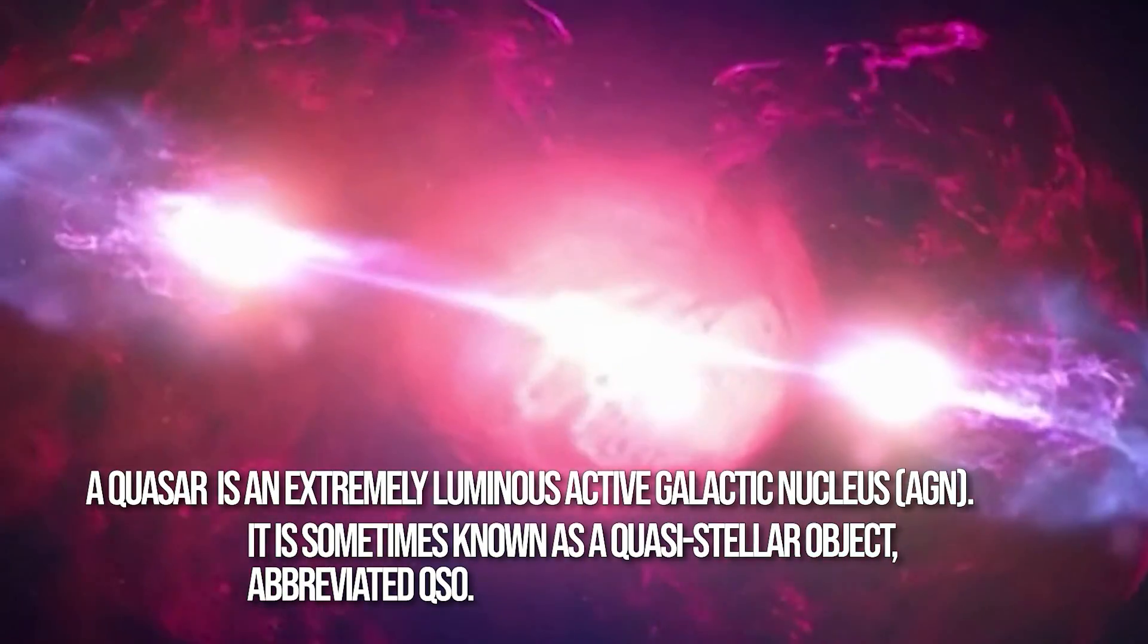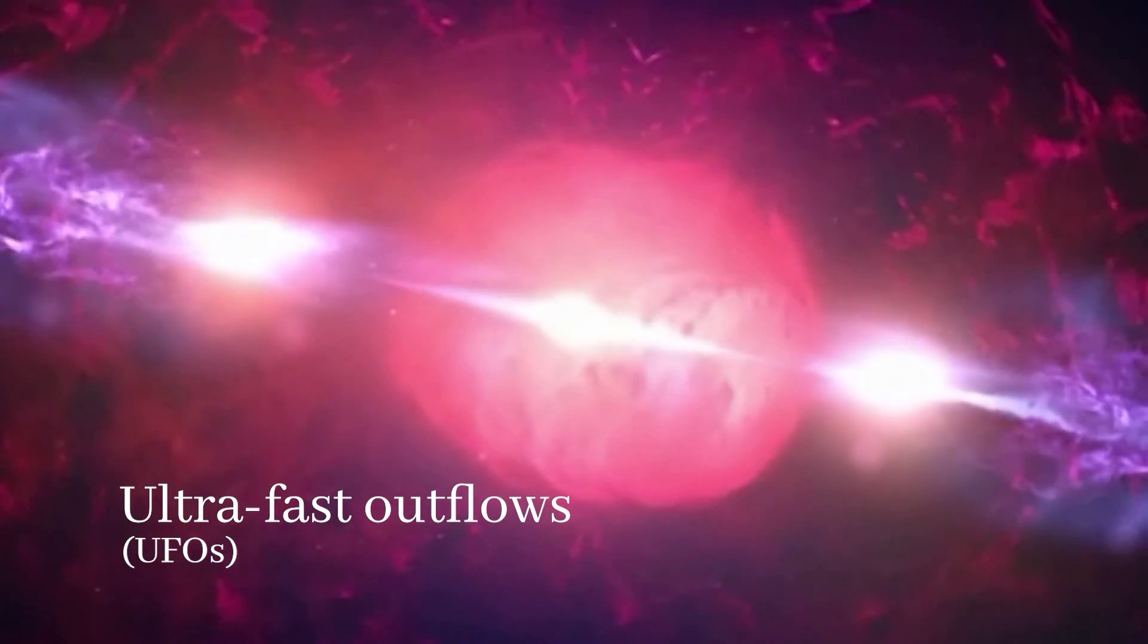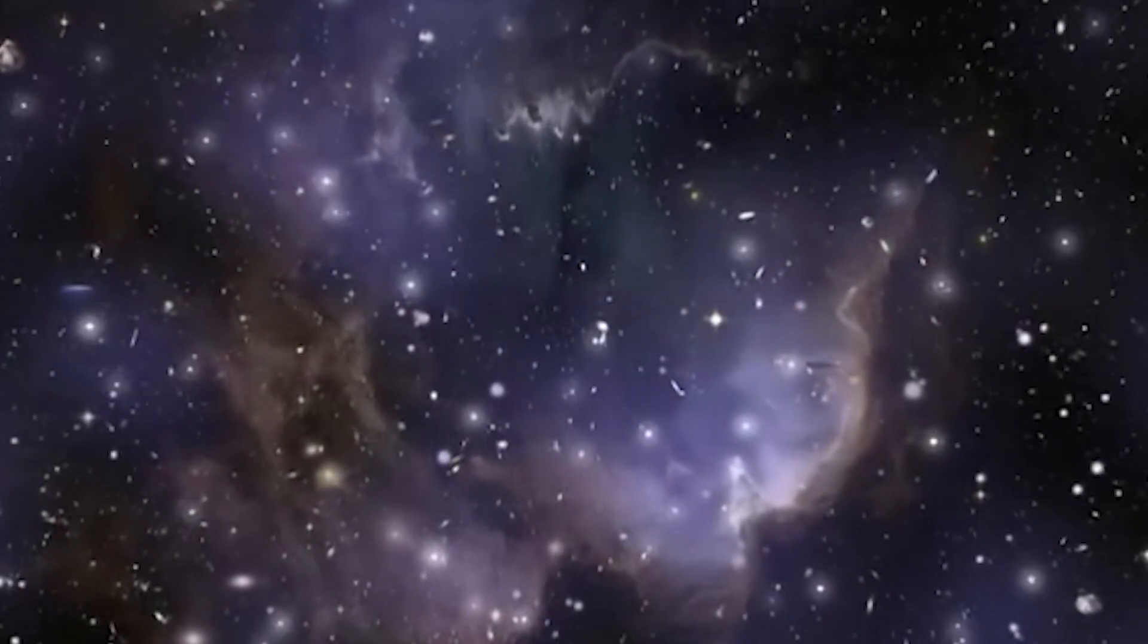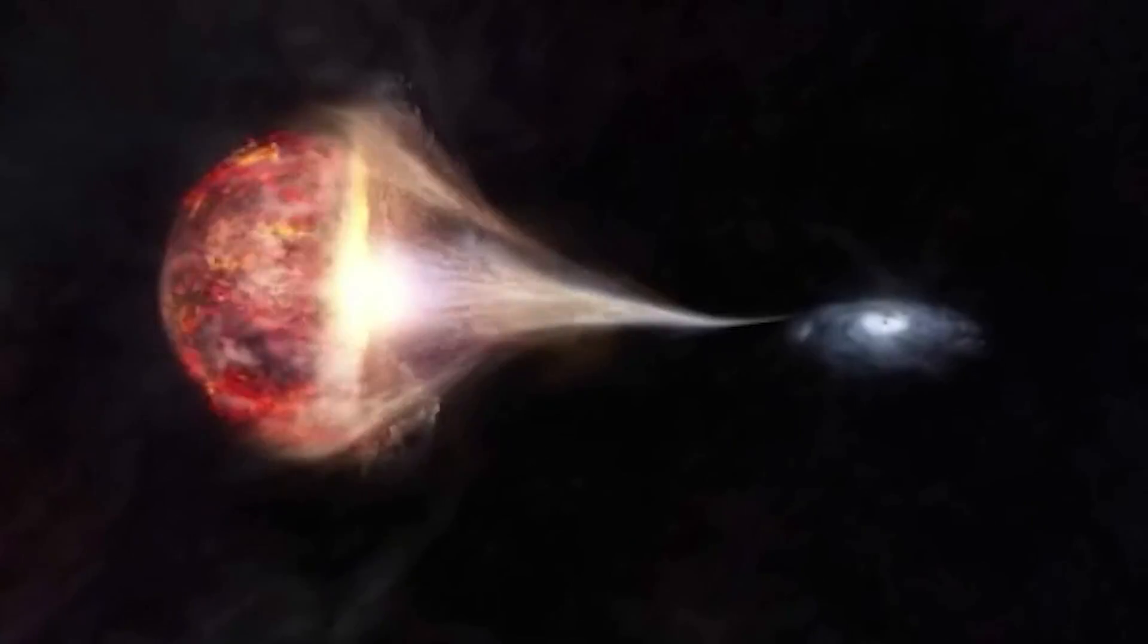These winds, UFOs, move close to the speed of light, relativistic speeds, and regulate the behavior of supermassive black holes during their active phase.